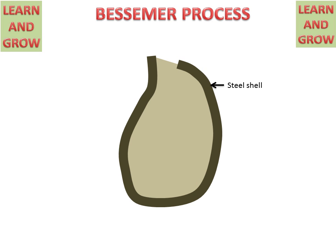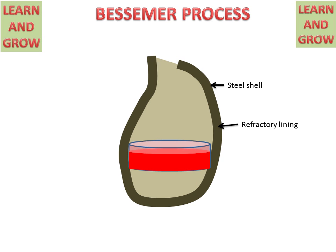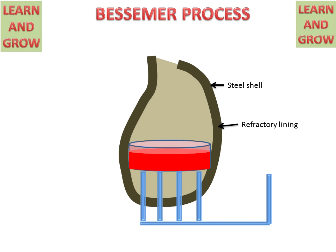This is the steel shell. It has a shape like an egg. And these are the refractory linings for resisting heat transfer. There is a container for molten pig iron. There are air pipes connected to the container. Air will enter through this side and reach the container of the Bessemer converter.